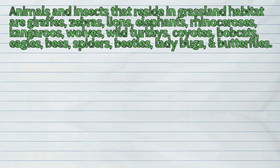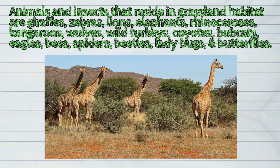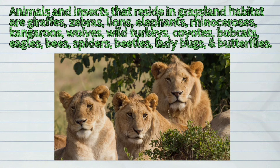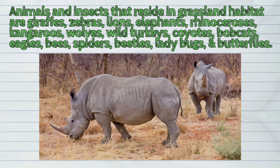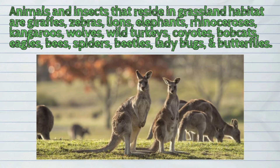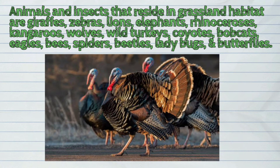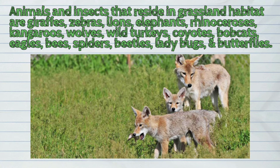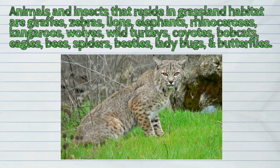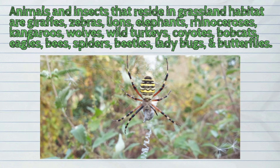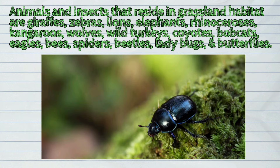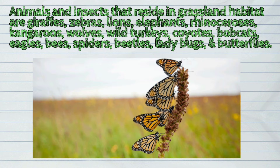Other animals and insects that reside in grassland habitats are giraffes, zebras, lions, elephants, rhinoceroses, kangaroos, wolves, wild turkeys, coyotes, bobcats, eagles, bees, spiders, beetles, ladybugs, and butterflies.